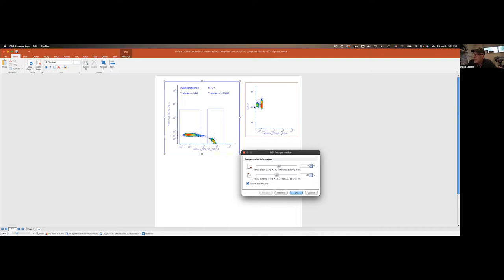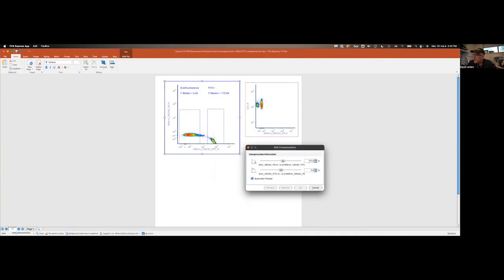If I increase the value to something higher, now the population curves down, and we're overcompensating our data. My median value is at minus 173. The presence of the artifact is an easy way to identify issues with your spectral overlap correction. If you understand what we have done here for the correction of FITC in the PE channel, you basically understand compensation in general.